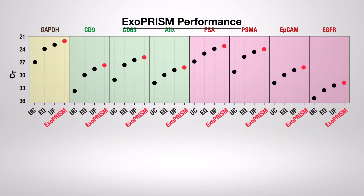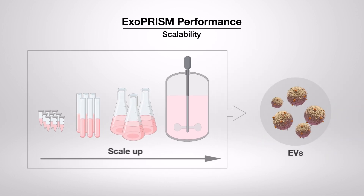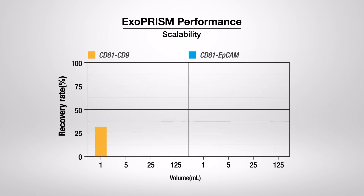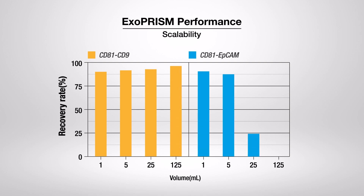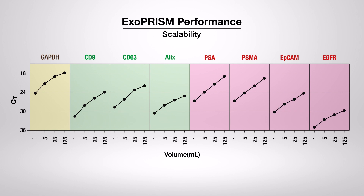The Exoprism EV isolation kit shows the same isolation performance regardless of sample volume. ELISA confirmed there is no significant difference in EV isolation recovery as sample volume increases. In addition, it was confirmed that the mRNA amount linearly increases with the increase in sample volume, reaching up to 125 milliliters for all biomarkers.